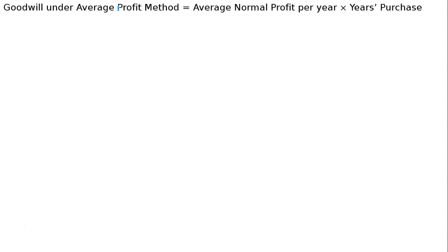Here we have a mix of normal and abnormal profit items. Please write down: Goodwill under Average Profit Method equals Average Normal Profit Per Year multiplied by Years of Purchase.